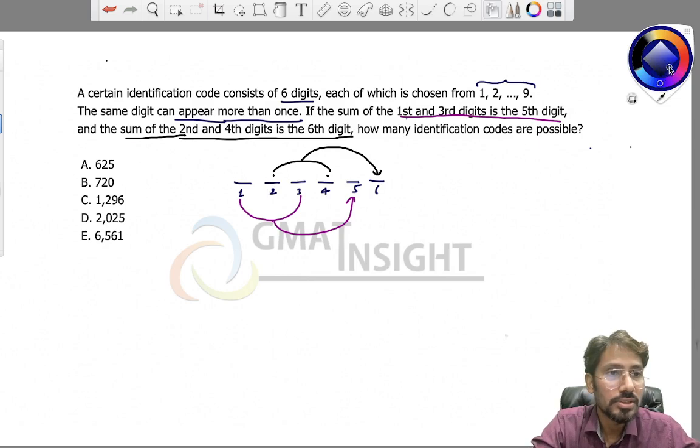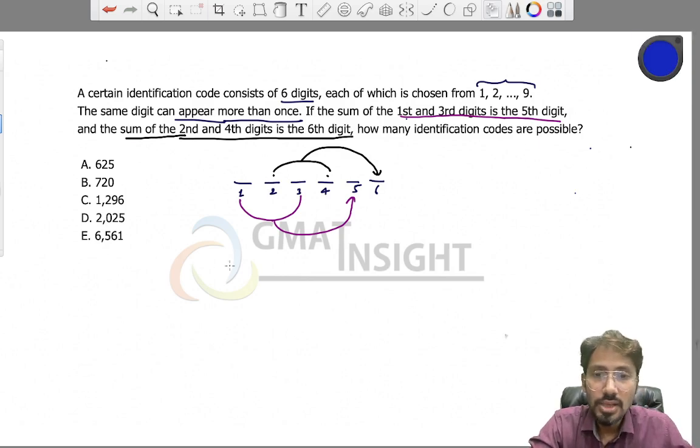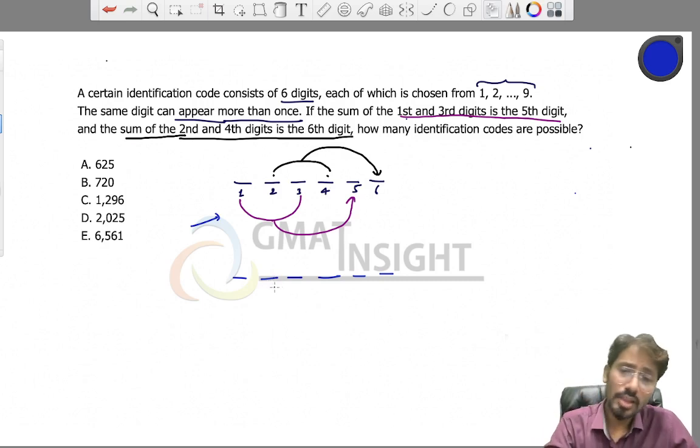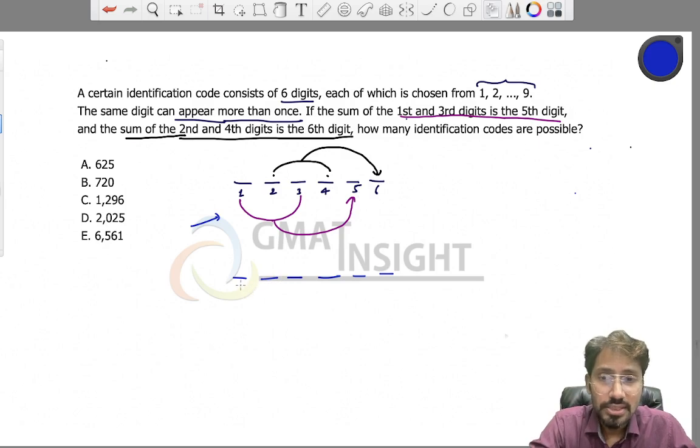Let me just focus on one specific set of numbers. I will focus on this condition: sum of the first and third place has to be the fifth place, because the other case is exactly similar. Now, because the sum of these two places is coming at this place, this place cannot be filled by any digit greater than nine.